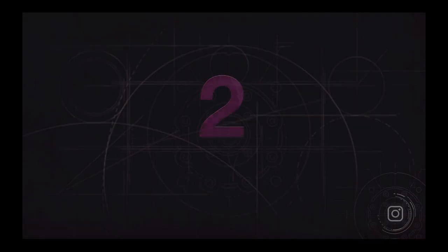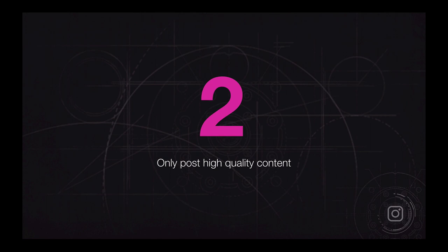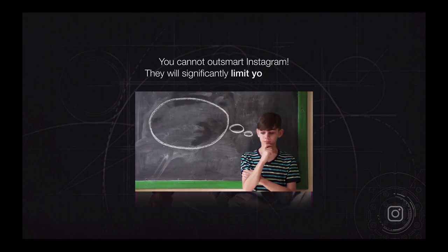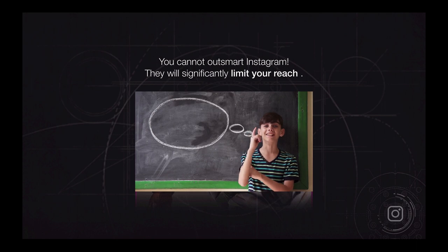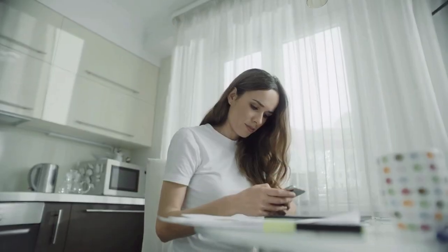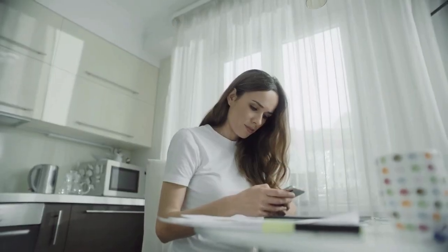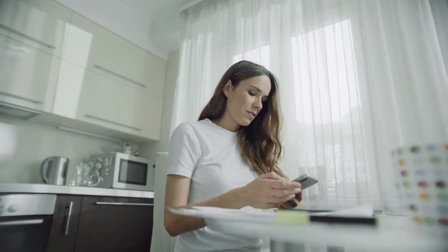Number two, they only post high quality content — the highest quality content. You cannot outsmart Instagram over the long term. They will significantly limit your reach if you don't have extremely high quality content. How do you know what's high quality? Go and see what the other top accounts are posting. Go and see what your most engaged posts are and post more of that stuff.